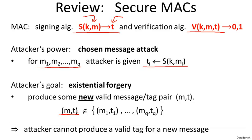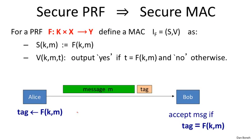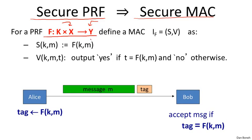We've already seen this definition, and now the question is how do we build secure MACs? The first example I want to give is showing that any secure PRF directly gives us a secure MAC as well. Suppose we have a pseudorandom function that takes inputs in X and outputs values in Y. The way we sign a message M is by simply evaluating the function at the point M — so the tag for message M is simply the value of the function at M.